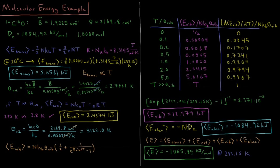The electronic energy is just −N times the dissociation energy, so for 1 mole that's −1084.92 kilojoules. The total energy is the sum of all these contributions, and the molar energy of CO at 293.15 Kelvin is −1065.85 kilojoules per mole. This is about 20 kilojoules per mole above the electronic ground state, coming mostly from the zero-point vibrational energy, plus a nearly equal contribution from translational and rotational components — the 5/2 NKT term.